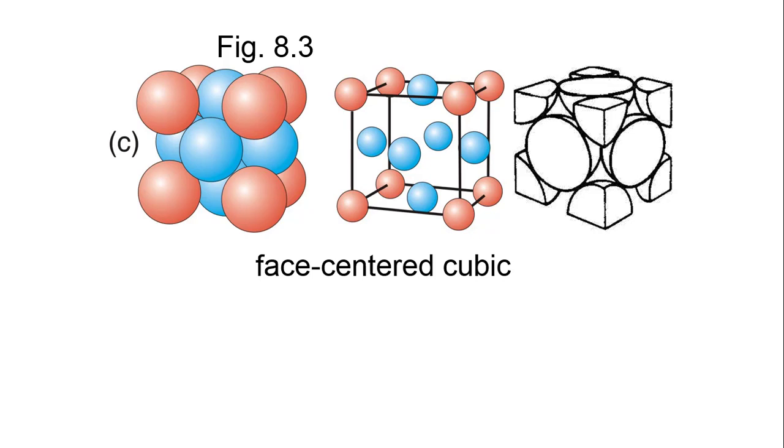Here is the face-centered cubic cell. On the right is a space-filling model showing that half of each face atom is inside the cell, but again only one-eighth of each corner atom is inside. Eight corner atoms, each contributing one-eighth, and six face atoms, each contributing one-half, total to a unit cell stoichiometry of four for the face-centered cubic cell.